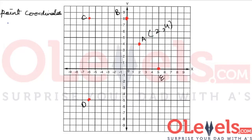Let's write them down. Point A has the coordinate (2, 4), which means that the x value of A is 2 and the y value is 4.